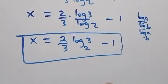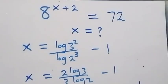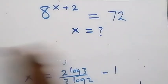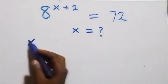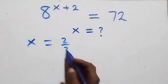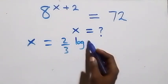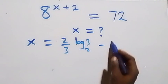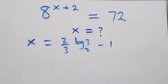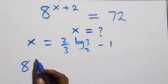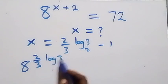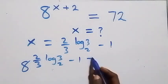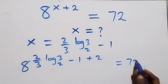That is the value of x: 2 over 3 times log base 2 of 3, minus 1. Let's check if this satisfies the problem. We substitute x equals 2 over 3 log base 2 of 3 minus 1 back into the equation, giving 8 raised to power (2 over 3 log base 2 of 3 minus 1 plus 2) equals 72.